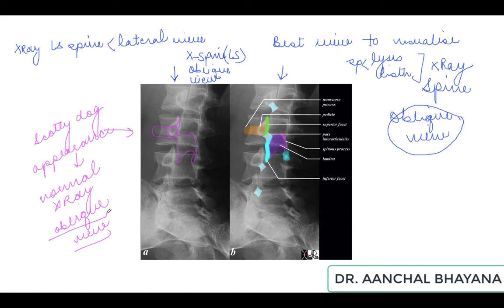The Scottie dog is formed as follows: the nose is formed by the transverse process, the eye is formed by the pedicle, the ear is formed by the superior articular facet, and the front leg is formed by the inferior articular facet. The superior and inferior articular facets of the same vertebra are joined by the pars inter-articularis, which forms the neck of the dog. Any defect in this neck region indicates spondylolisthesis.